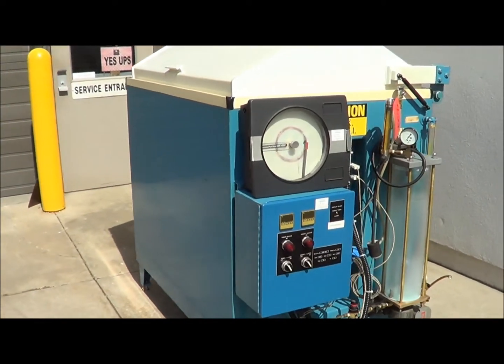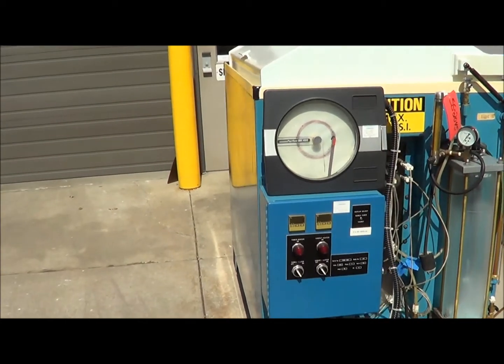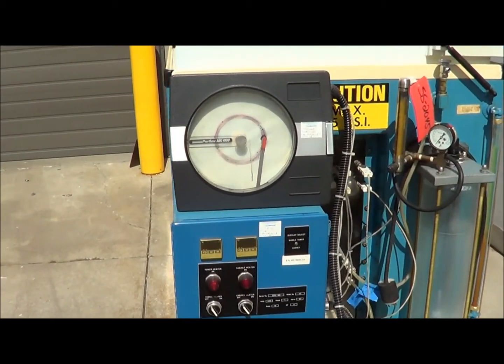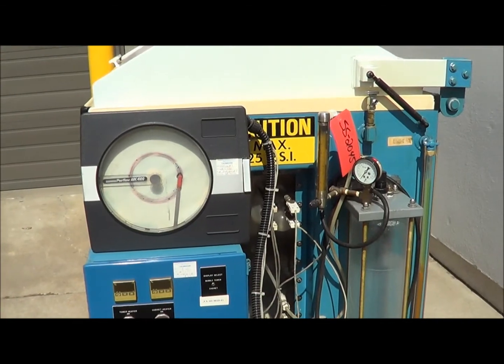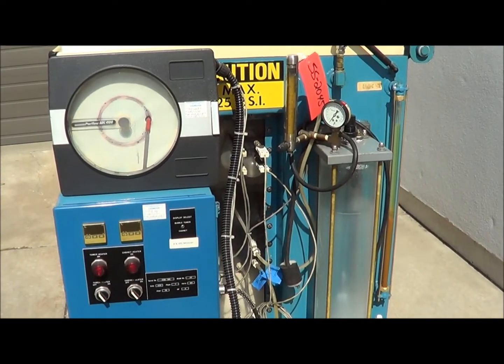This is a 30 cubic foot unit. On the side here you can see the controls, it has digital Omron temperature controls as well as a chart plotter.